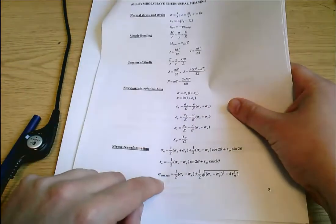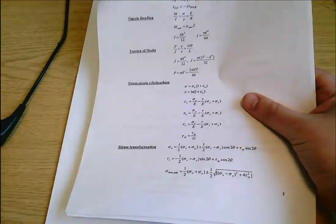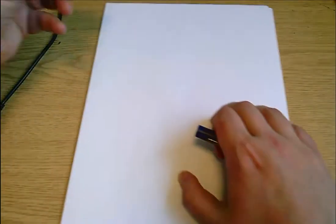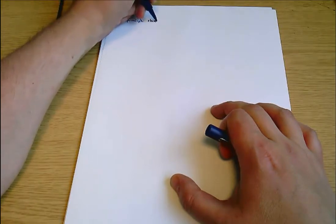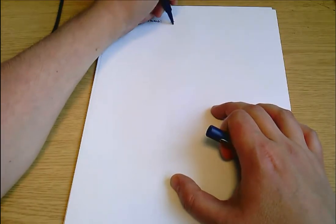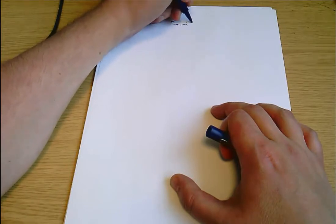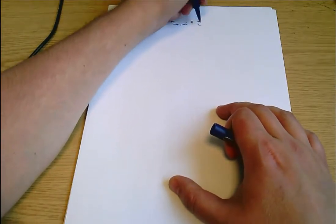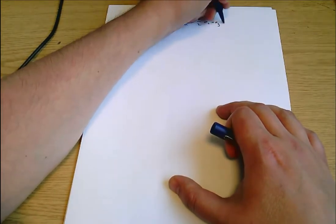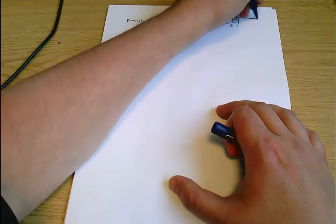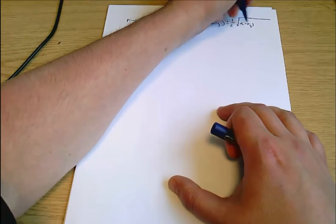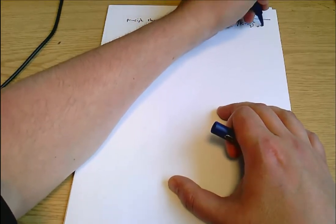Let's go straight to the stress transformation section. We're interested in principal stresses, so we can say principal stresses sigma max comma min equal one-half sigma X plus sigma Y plus or minus one-half square root sigma X minus sigma Y all squared plus 4 tau XY squared.